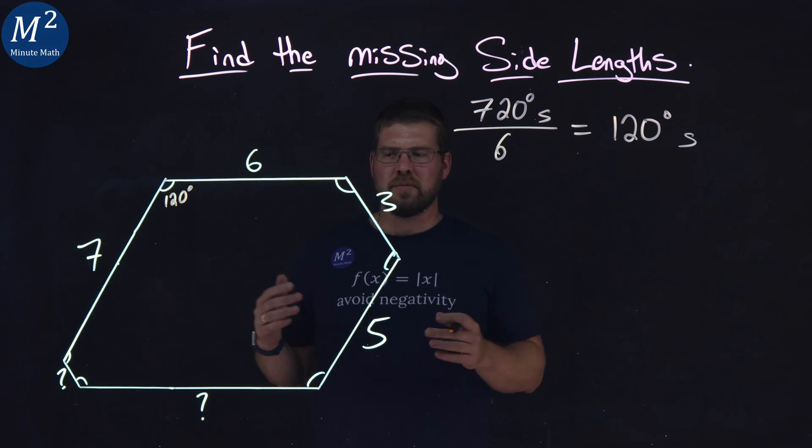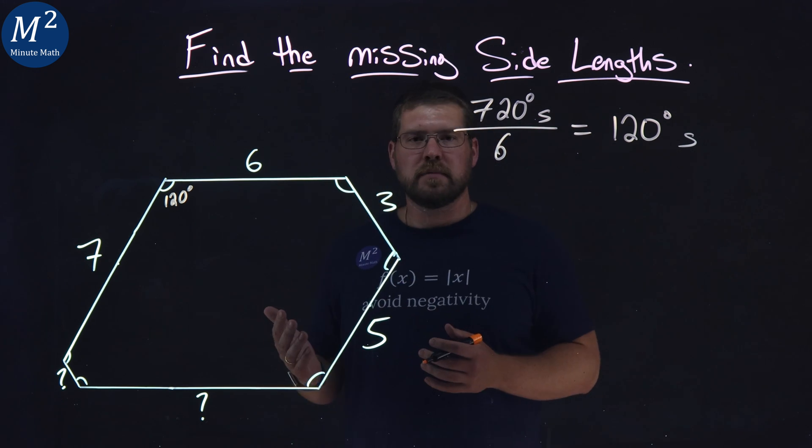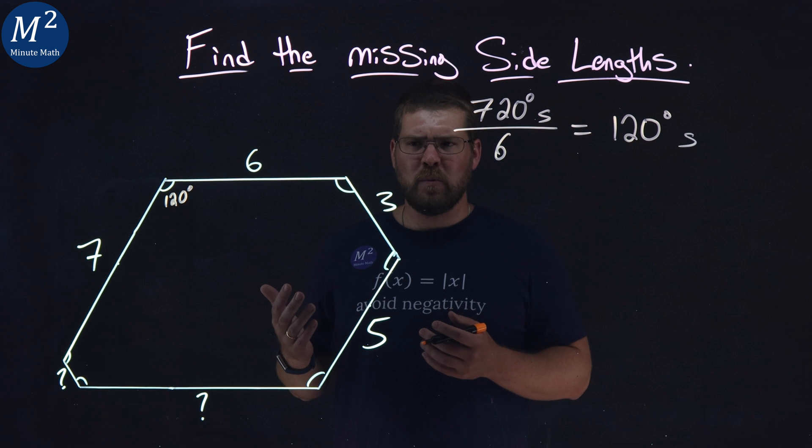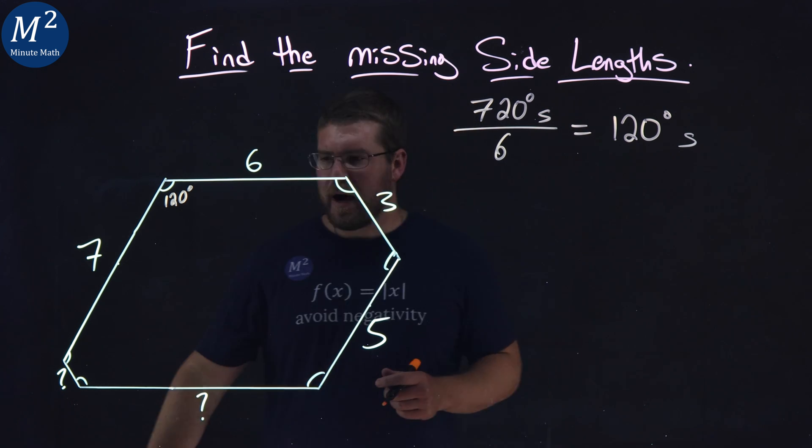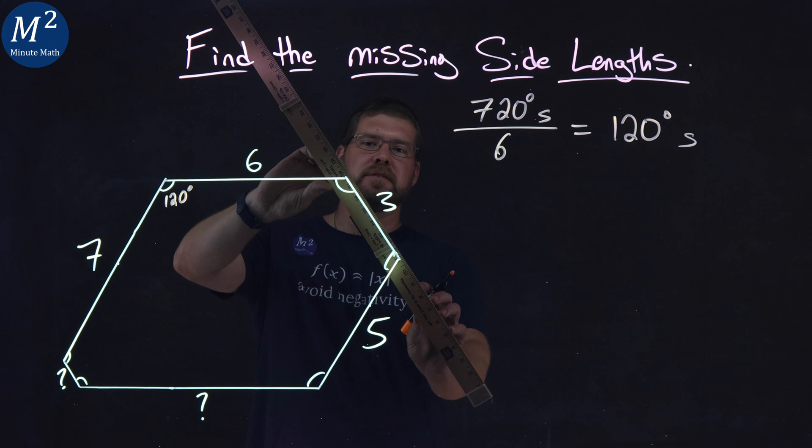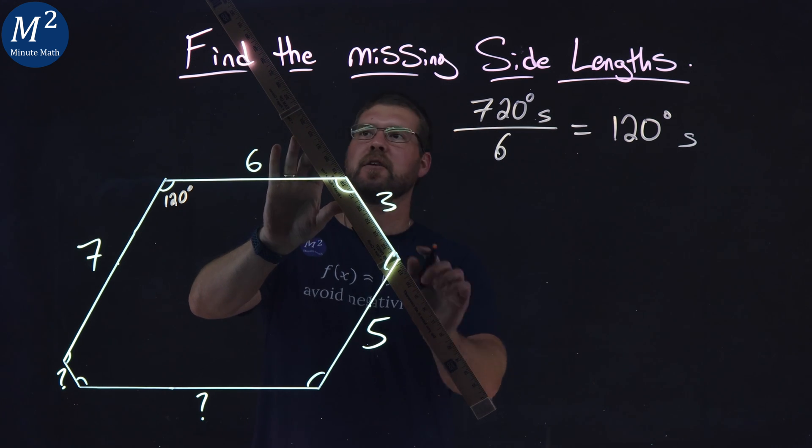All right. Now with this information, where can we go? One of the things with these types of problems here, geometry problems, is we can add lines and shapes to it. Okay. So I'm going to extend this hexagon, these lines here, to make a triangle.